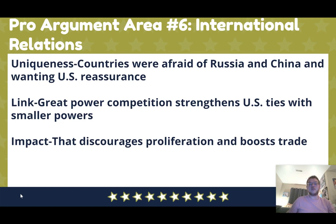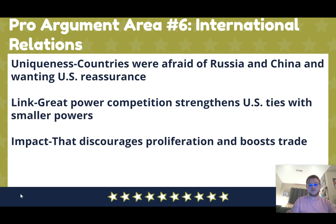The sixth argument area concerns international relations with non-Russian or Chinese countries. Many countries are afraid of Russia and China and want reassurance from the U.S. When we have great power competition, the U.S. tries to be better diplomatically, which forces us to strengthen relationships with allies. When allies feel that stronger relationship, they're less likely to build their own nuclear weapons, more likely to trade with us, less likely to go to war, and more likely to cooperate with U.S. goals.